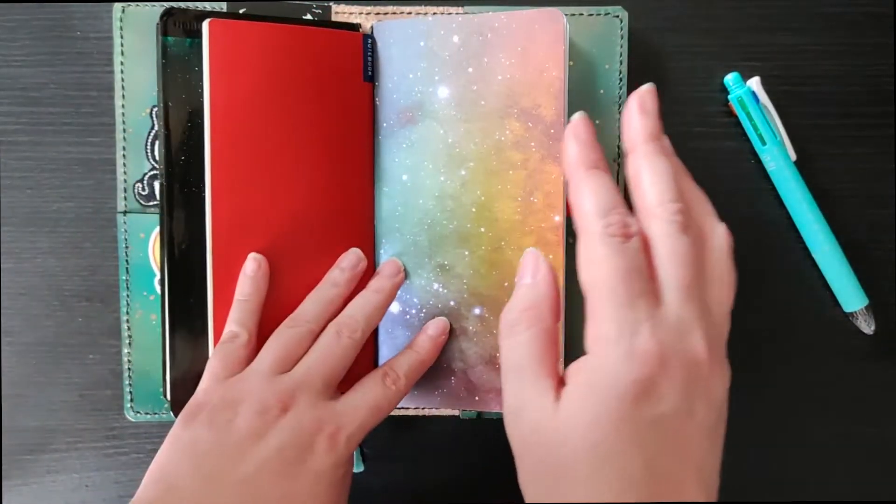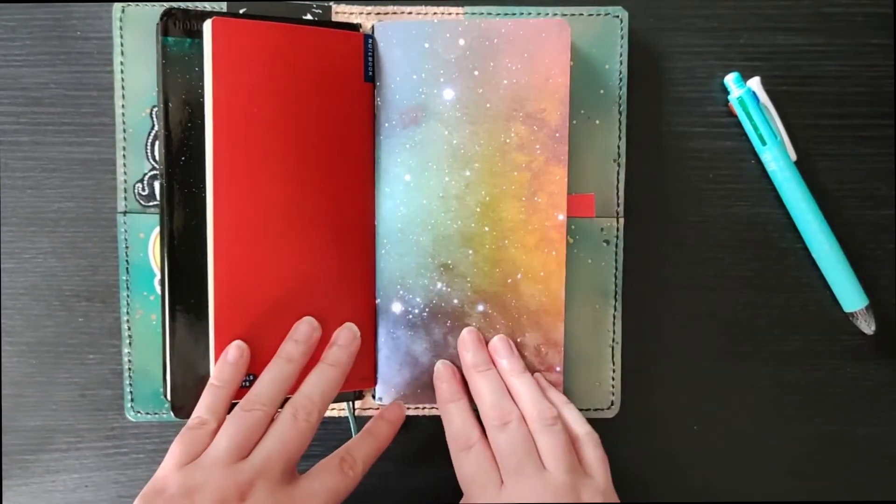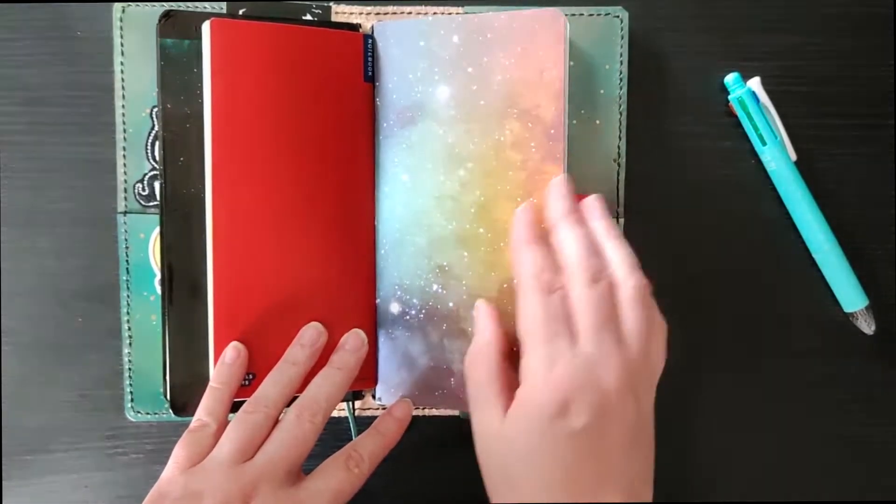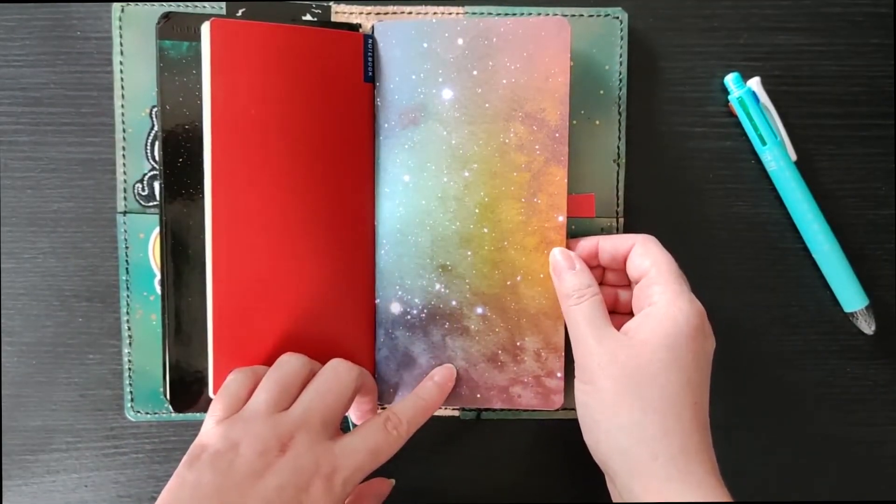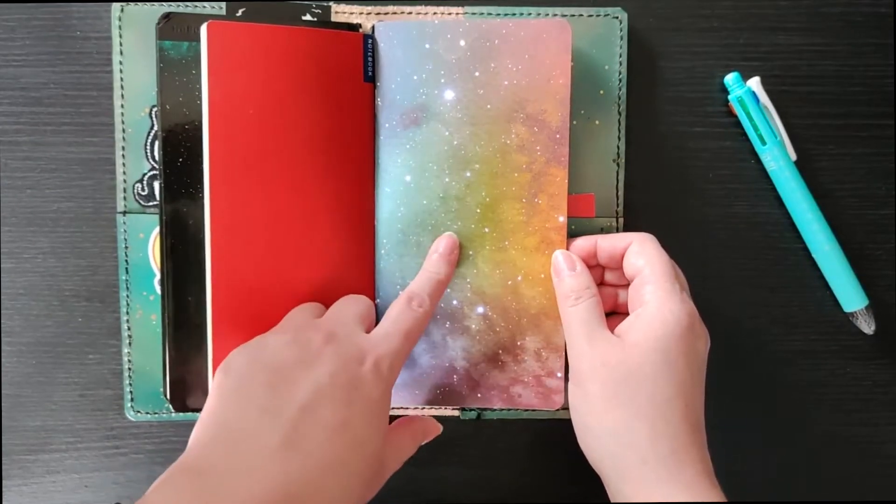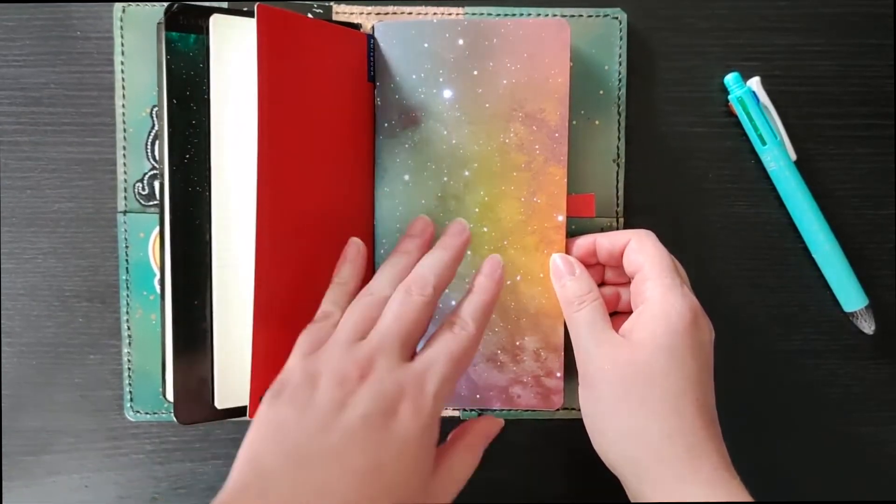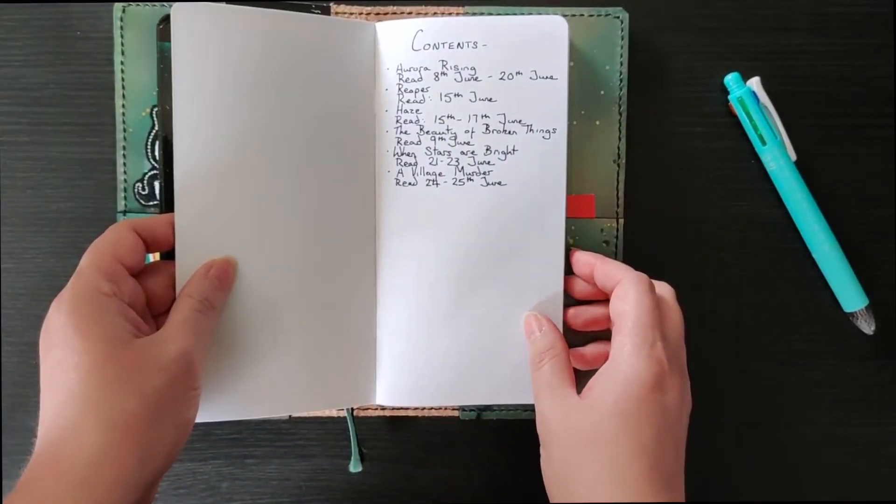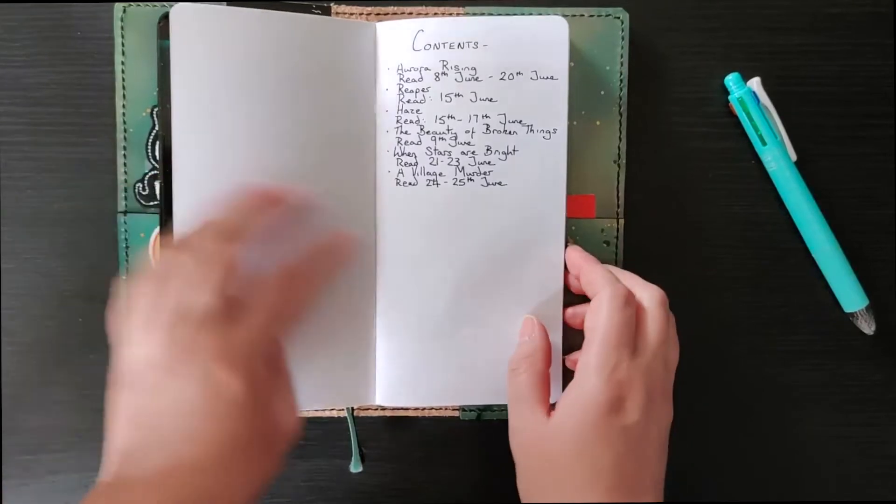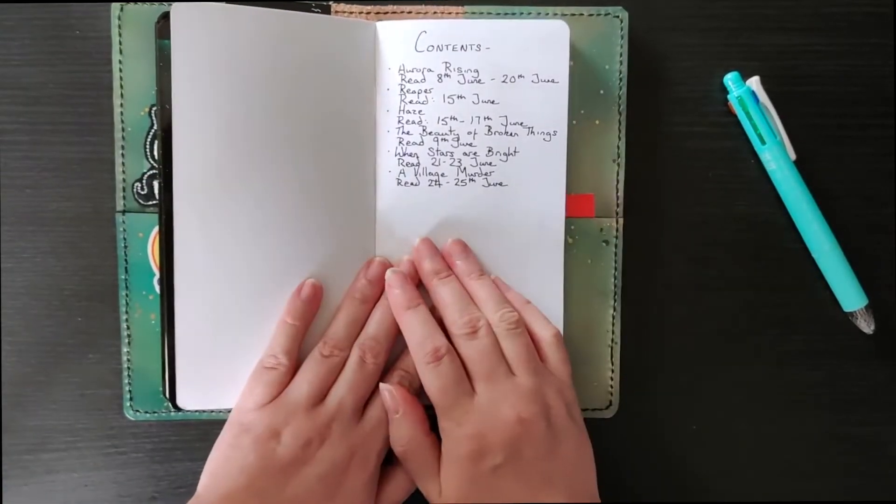And the next booklet I have is my book journal so this insert is the Rainbow Galaxy insert from Chelsea Paper Co which is another UK based company. And this one I use to keep a journal while I read.